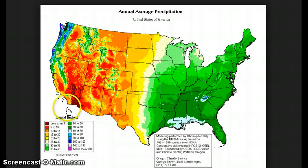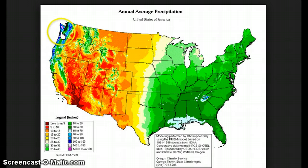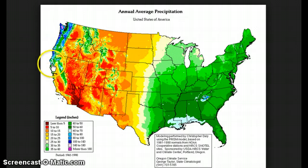The west coast starts off down here actually very dry because of that cold current. As we move up the coast, it does get wetter. But we also have the Sierra Nevada mountain range right there that makes all of these cities here on a windward side of a mountain, which is why they are getting more precipitation.